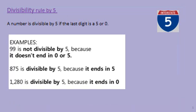After learning divisibility by 2, we are going to learn divisibility by 5. A number is divisible by 5 if the last digit is 5 or 0. For example, 99 is not divisible by 5 because the ones digit is 9 — not 0 or 5. But 875 is divisible by 5 because the ones digit is 5. And 1,280 is divisible by 5 because the ones digit is 0.